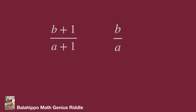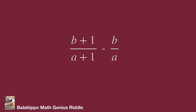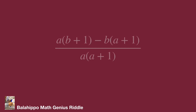If we can prove that b plus one over a plus one minus b over a is larger than zero, then b plus one over a plus one should be larger than b over a, which means b over a is less than b plus one over a plus one. So now we compute b plus one over a plus one minus b over a. Subtracting these two fractions gives a times (b plus one) minus b times (a plus one), all over a times (a plus one).